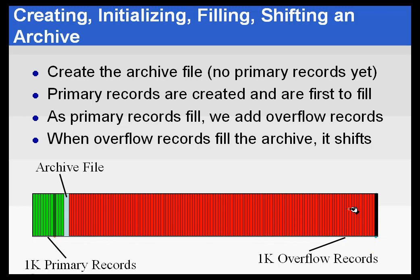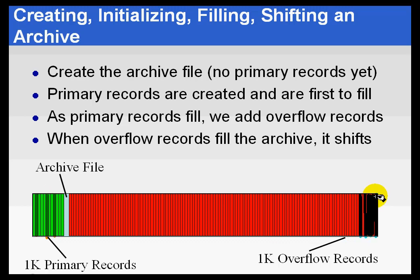As these primary records fill, we generate overflow records extending from the end of the archive forward. As those overflow records fill, we generate additional ones. Once a PI tag has generated more than three overflow records, we consider it a busy tag and treat it differently. We change the primary record into an index record — we take all the data out of it, move that data into an overflow record, and the primary record becomes an index into where the data is found in the overflow records.